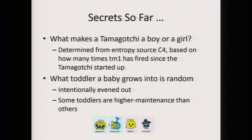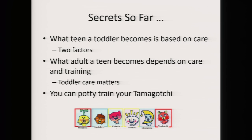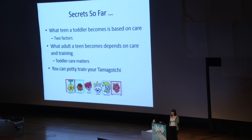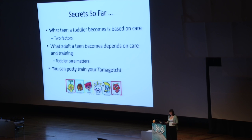What I also thought was fun was that some toddlers are higher maintenance than others — some you hardly need to care for and they'll become the best teenager, and some you've got to care for a lot and it doesn't even seem to have an effect. What teen a toddler becomes is much more complex. Basically there are two care factors that start off at zero, and every time you mistreat your Tamagotchi — don't feed it or something — you get dinged on them. Based on how low these factors are, you get different Tamagotchis, but there's still some entropy involved. What adult a teen becomes also depends on these same factors, plus a third factor: how well disciplined your Tamagotchi is. Toddler care also matters — if you take great care of your toddler, you don't have to take such good care of your teen for it to become a great adult.